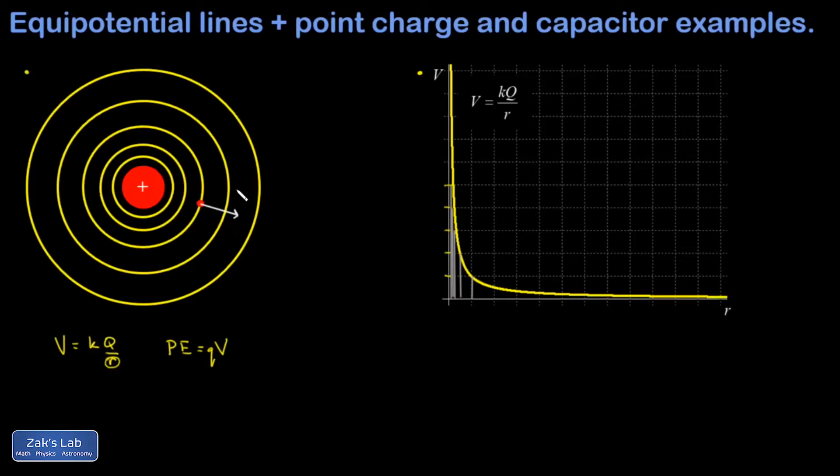In other words, the electric force points radially. Well, that means the electric field points radially as well. And in fact, the electric field is always perpendicular to the equipotential lines for this reason.